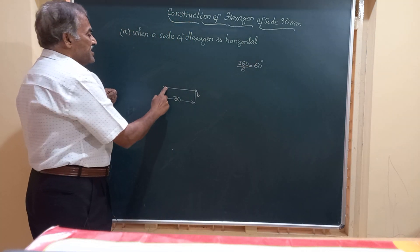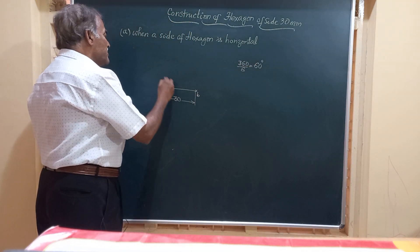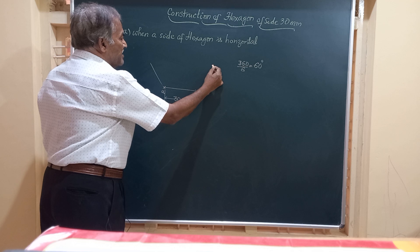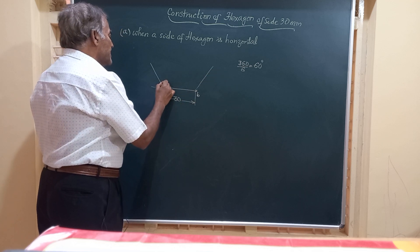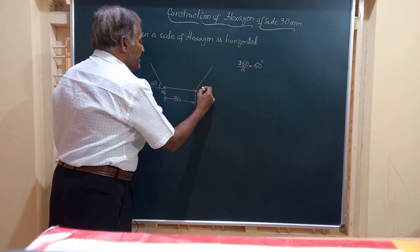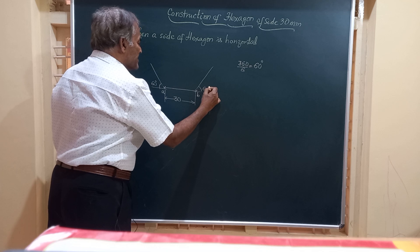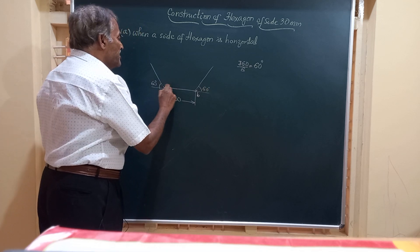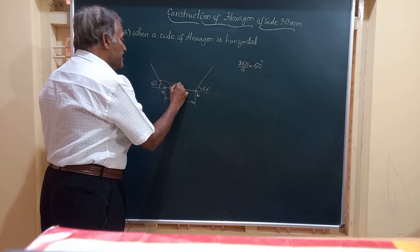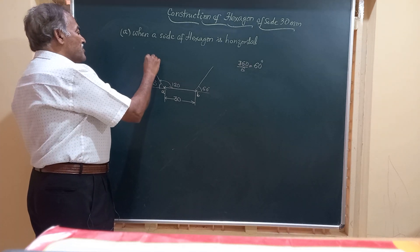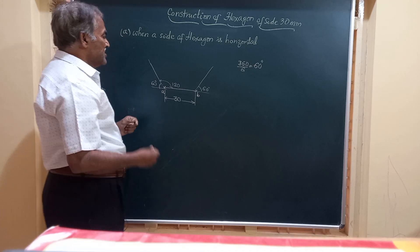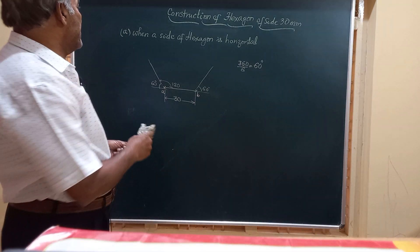At points A and B I am going to draw two lines inclined at an angle of 60 degrees to the horizontal. This is an exterior angle of 60 degrees, or the interior angle will be 120 degrees, that is 180 minus 60. We now have two lines drawn at A and B at an angle of 60 degrees to the horizontal.